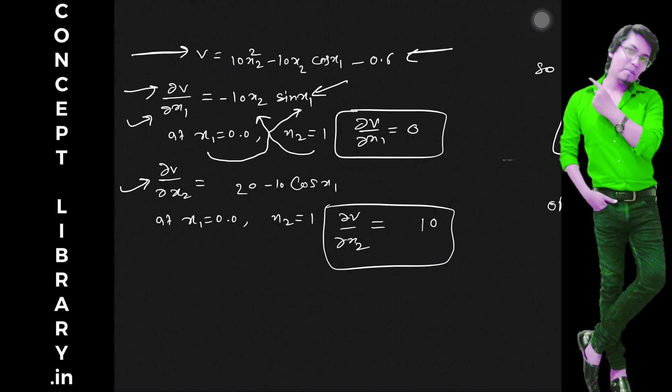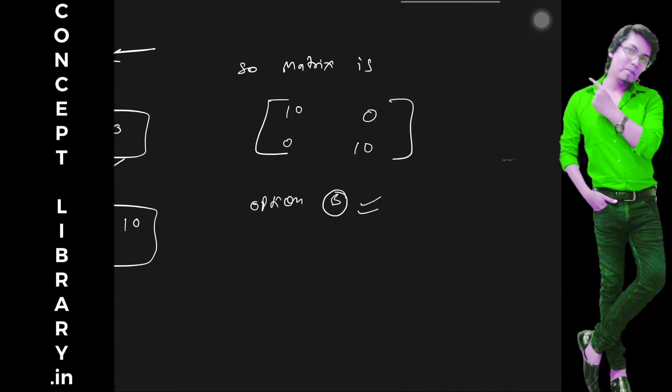So we got the answer, substitute this x1 value here and this x2 value here. You will be getting ∂v/∂x1 as 0. And after differentiating this with respect to x2, substitute x1 value here and we don't have x2, so we got ∂v/∂x2 here.